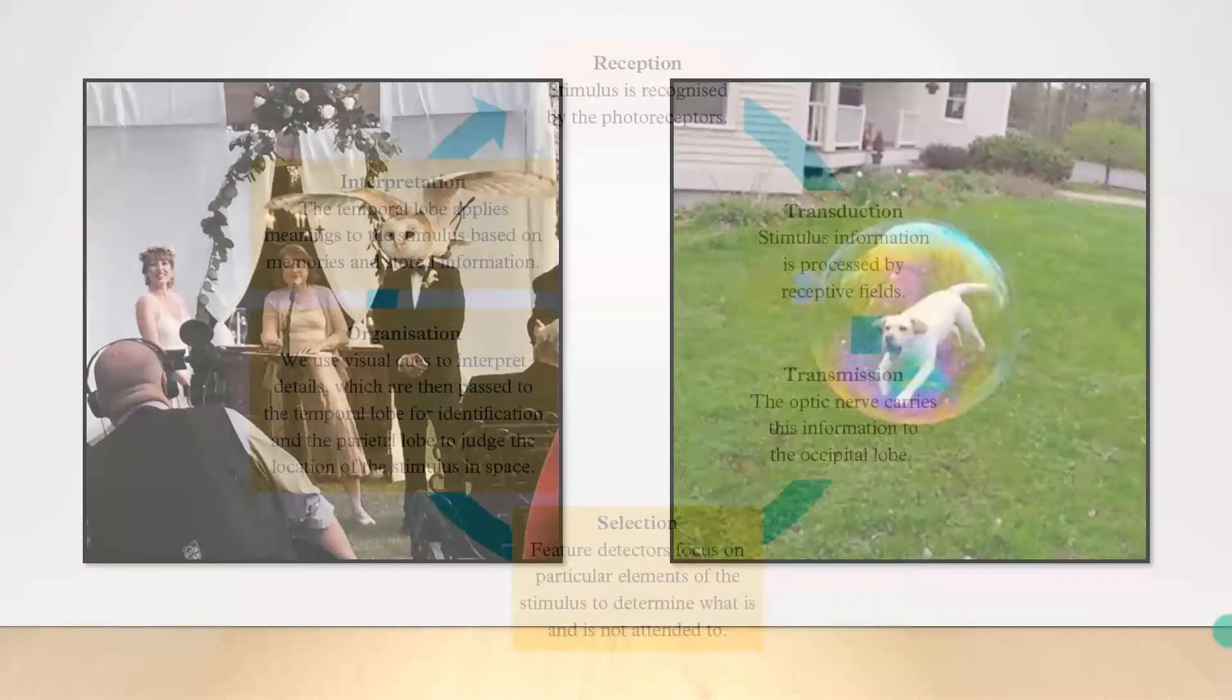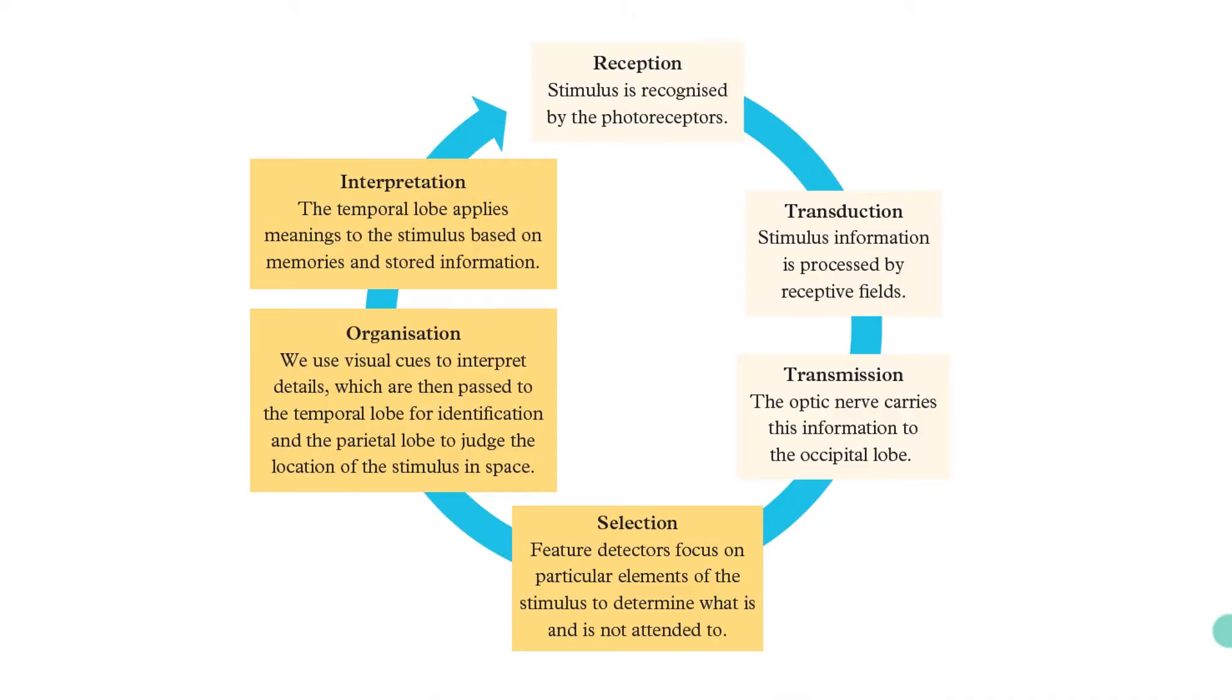You see, in just a split second, your visual system goes through this entire process of reception, transduction, transmission, selection, organization, and interpretation. It's pretty crazy, but let's go step by step to try and understand it.